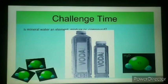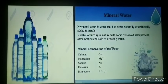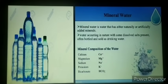Now, challenge time. The question is: is mineral water an element, a mixture, or a compound? The answer is that mineral water is water that has either naturally or artificially added minerals. Water occurring in nature contains dissolved salts in it, so we cannot consider it a pure substance. Mineral water is a mixture containing calcium, magnesium, sodium, potassium, or bicarbonate salts.